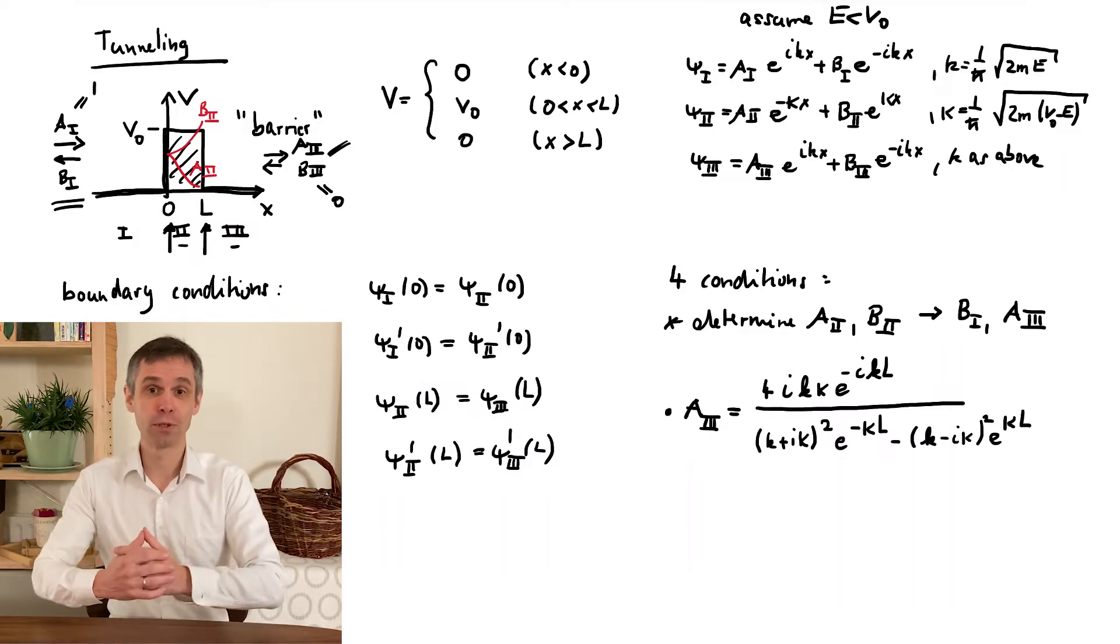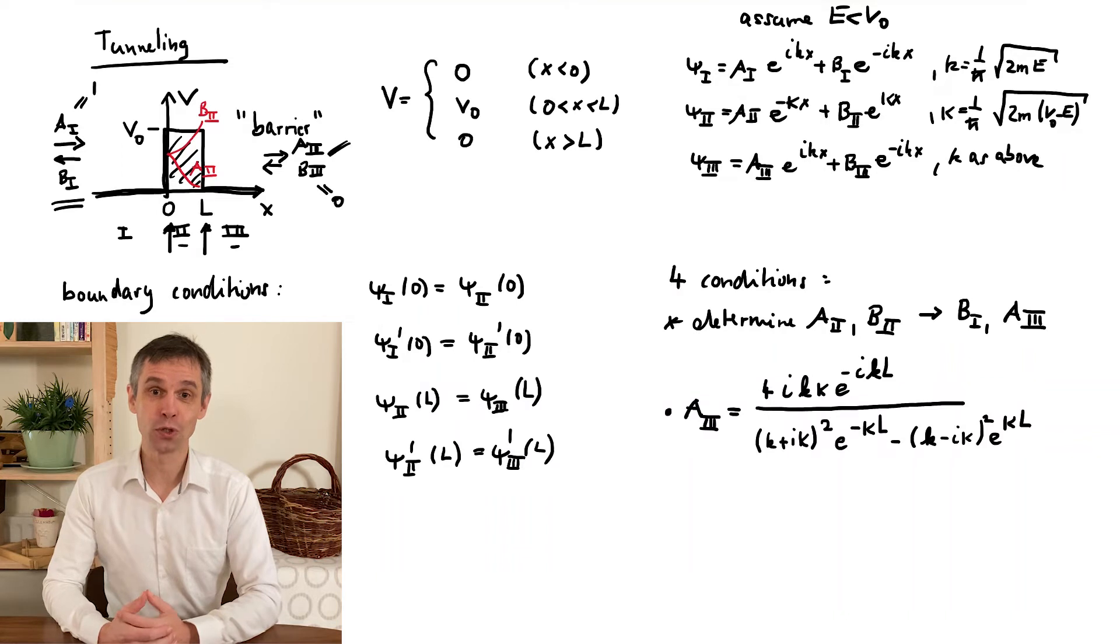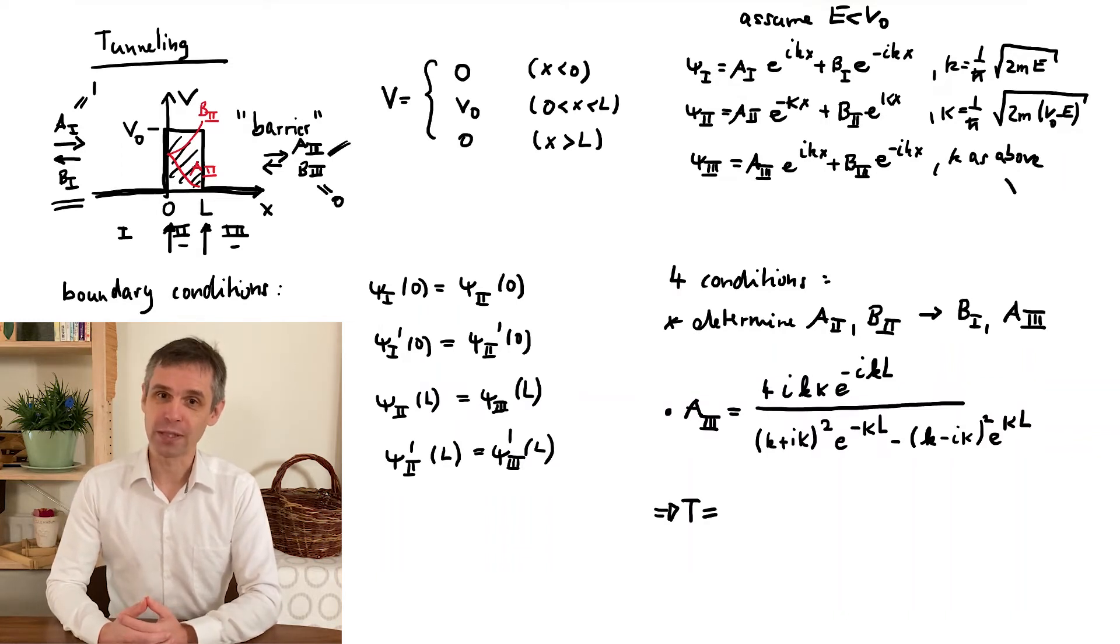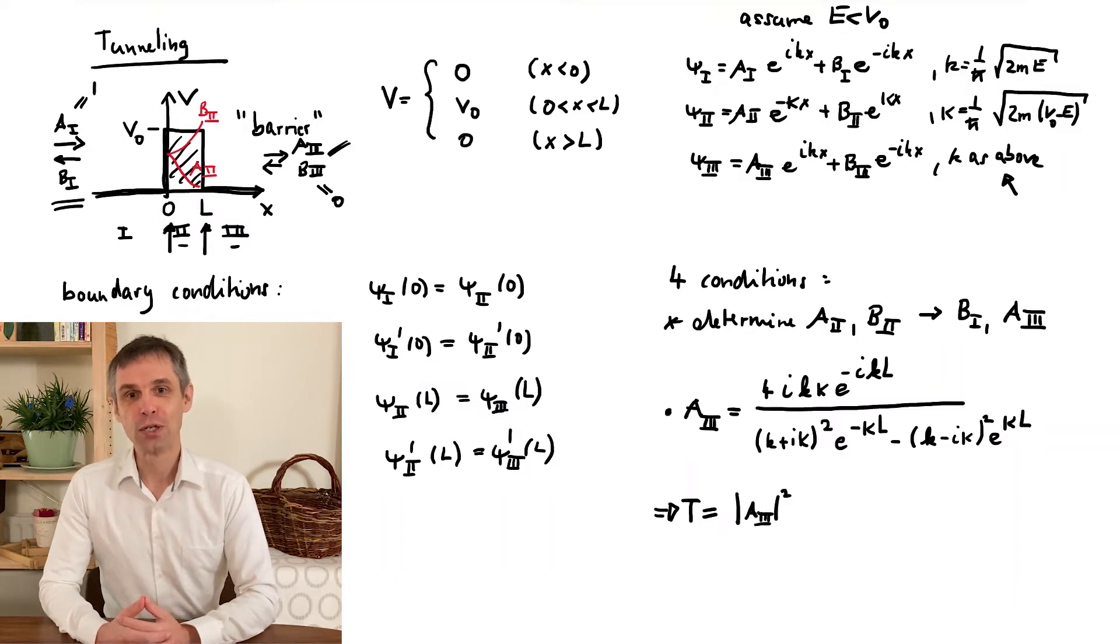Now in this case, the transmission probability is just the absolute value squared of a3. There is no extra factor, because the wave numbers in regions 1 and 3 are the same. And so we get an explicit expression written down here.